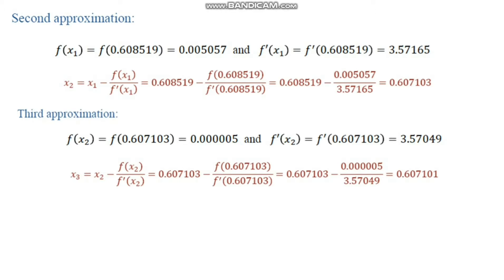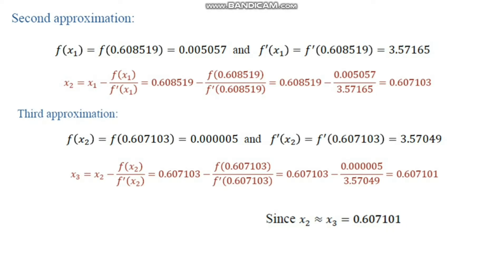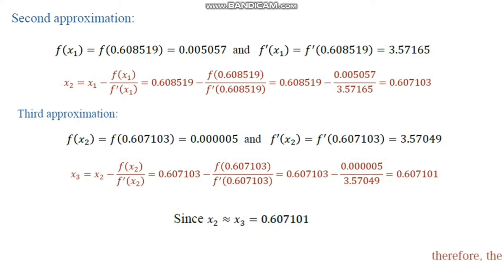One can clearly observe that the values of x at the second and third iterations are almost equal. Since x₂ ≈ x₃, we can stop the procedure. The final iteration value is taken as the solution to the equation, so the root of the given equation is 0.6071.